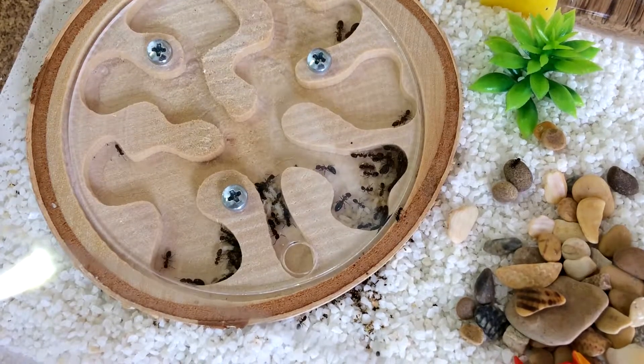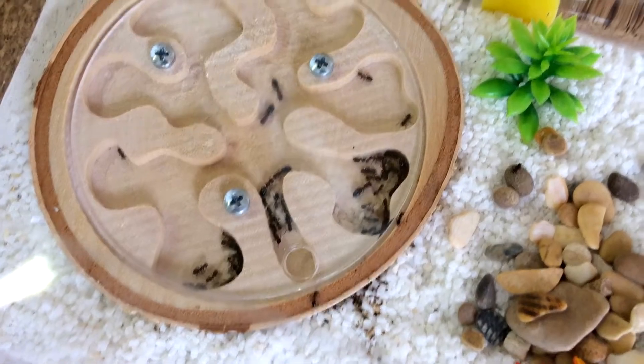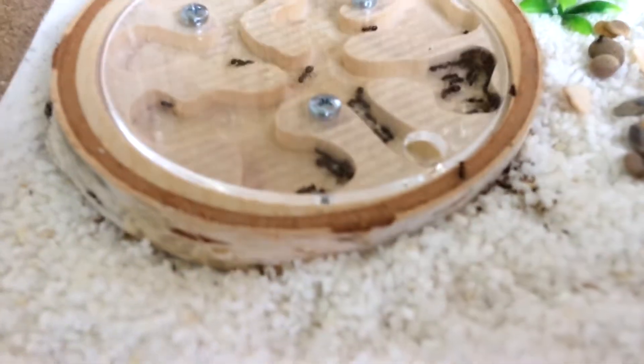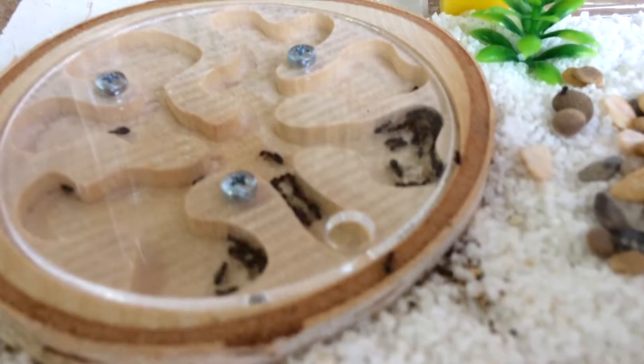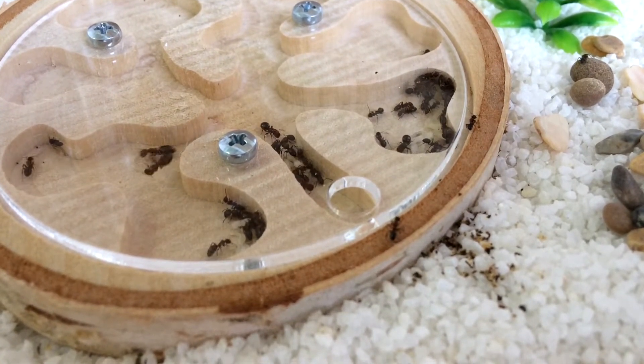The next day our family moved into the new nest and located in the farthest from humidification chamber. Because these ants prefer low humidity level about 50-80%.